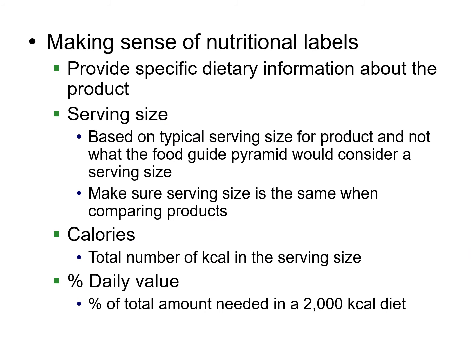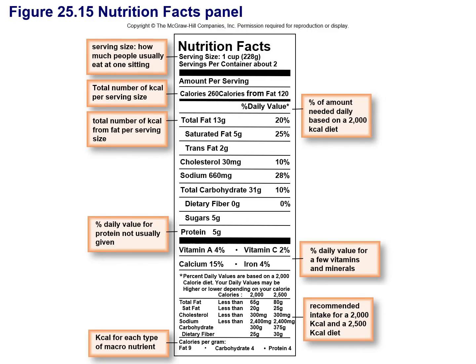Nutrition labels are based on a 2,000-calorie diet, but that's not right for everyone. Bigger people can consume more and still lose weight; smaller people may find 2,000 calories too much. Everyone has a different metabolism. While nutrition labels are useful — telling you percent recommended daily values, fat content, cholesterol, sodium, and dietary fiber — they are not the definitive guide to nutrition. They're just tools to help you judge whether something is good for you.